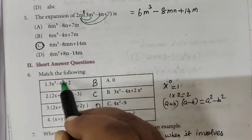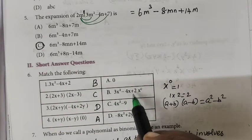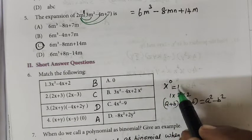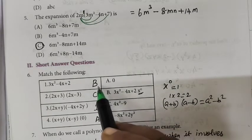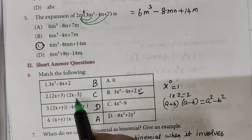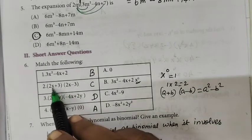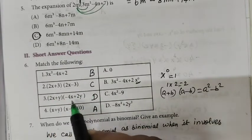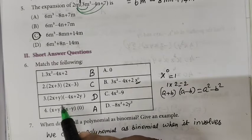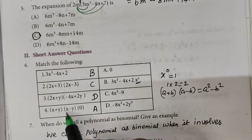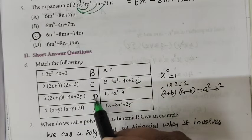Now short question — Match the following. For 3x² minus 4x plus 2: x power 0 is 1, anything power 0 is 1. So Option B is correct. For (2x + 3)(2x − 3): this is of the form (a + b)(a − b) = a² − b², so the answer is 4x² − 9. Then 2x plus y is matched. The last one involves (x + y)(x − y) multiplied by 0 — anything into 0 is 0, so the answer is 0. D is the answer.